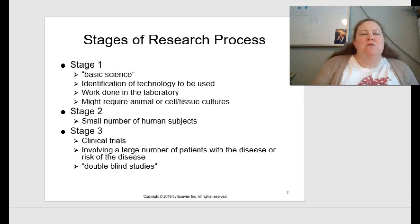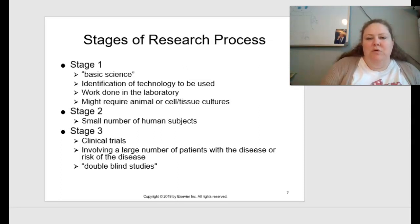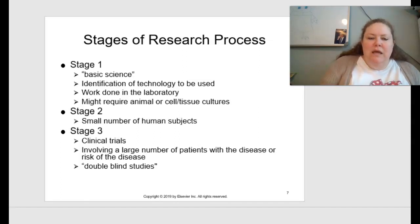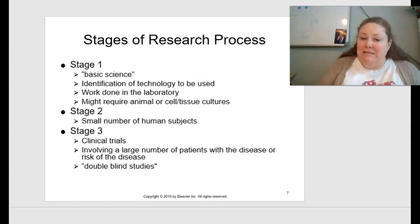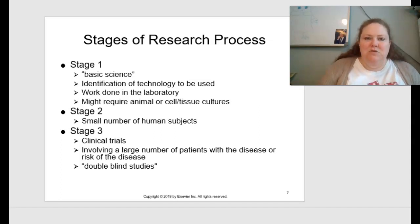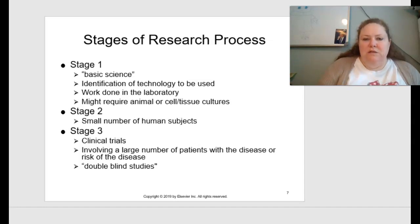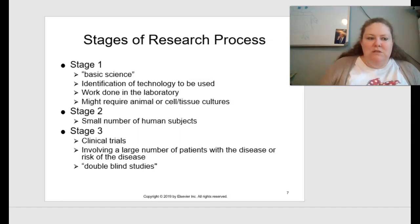In a double-blind study, the only person who knows who received what is the actual researcher, tracked through coded names and data banks. Since we're in the middle of a pandemic at the time of this recording, there's a lot of speculation about vaccines being administered to the general population — available more broadly than just clinical trial participants, partly because some feel the clinical trials were rushed. That would be a fun class discussion.